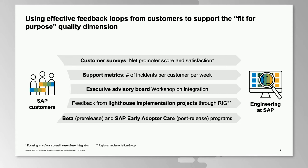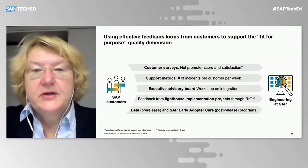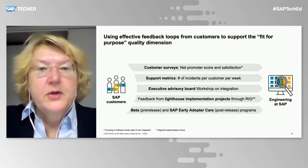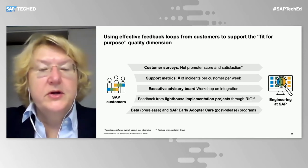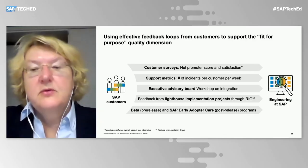An important part of our interaction is with our customers. We use effective feedback loops to support the fit-for-purpose dimension in our quality. We interact with customers in many ways: customer surveys covering net promoter score and satisfaction, support metrics such as incidents per customer per week and SLA resolution, workshops, an executive advisory board, integration workshops, feedback from lighthouse implementation projects through our regional implementation group, and a pre-release testing and SAP early adoption care program covering both pre- and post-release phases.